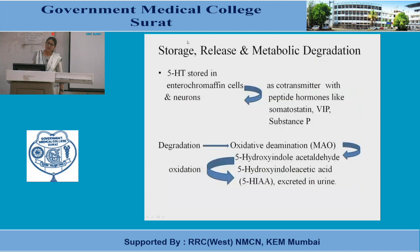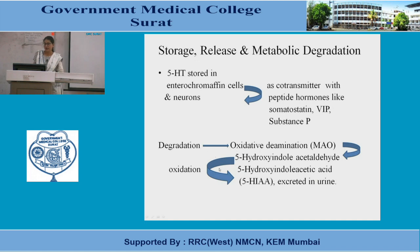Where is 5-hydroxytryptamine stored, how is it released, and how is it degraded? It is stored in enterochromaffin cells and neurons, and it is not stored alone — it is stored as a co-transmitter with many peptide hormones like somatostatin, VIP, and substance P. Degradation is by oxidative deamination forming 5-hydroxyindoleacetic acid, which after oxidation is converted into 5-HIAA and excreted in the urine.